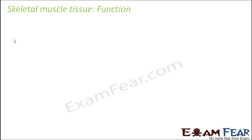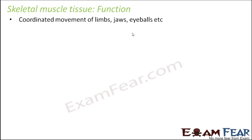Now let us talk about the function of skeletal muscle tissue. Skeletal muscle tissues help in the coordinated movement of limbs, jaws, eyeballs, etc. The movement is not just any random movement — there has to be proper coordination. For example, if you are playing football, moving only your legs will not help. When you run, not only your legs but also your hands move in coordination, and even your eyeballs must track where the football is. So this skeletal muscle tissue helps in coordinated movement of limbs, jaws, eyeballs, and so on.